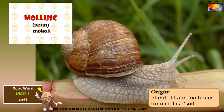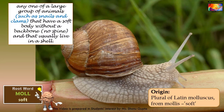The next root is moll, which gives rise to at least three important words in English. You can memorize this easily because there is a large group of animals called mollusks — which includes snails, clams and octopuses. These animals have a soft body without a backbone and they usually live in a shell. They get their name mollusks because of their soft bodies.